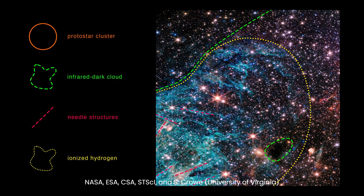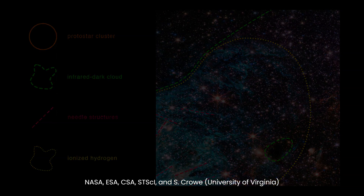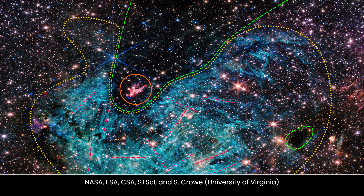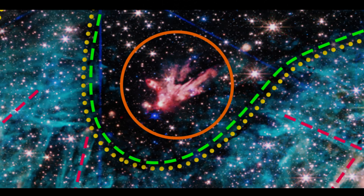The observation team, led by Samuel Crowe, an undergraduate student at the University of Virginia, emphasizes the groundbreaking nature of the data obtained by the Webb Telescope. Approximately 500,000 stars are visible in the image, along with unidentified features. Among these stars is a cluster of protostars — stars in the process of formation and gaining mass — producing outflows that glow in the midst of an infrared dark cloud. One massive protostar over 30 times the mass of the Sun is at the heart of this cluster.